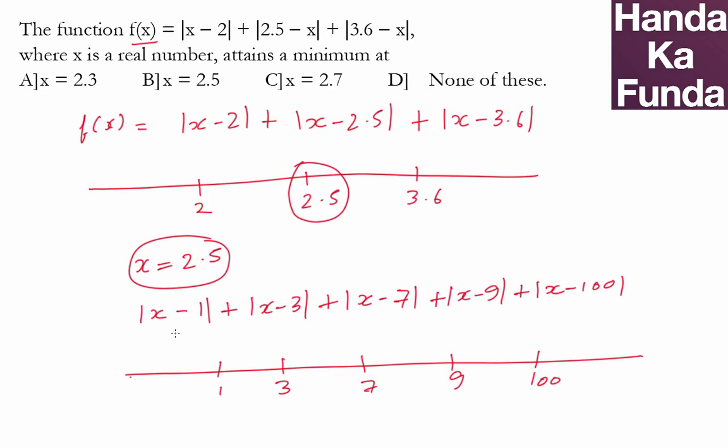Odd number of values, all of them are |x - a|, |x - b|, |x - c| types. This will be minimum at x = 7. So the given function is minimum at x = 2.5.